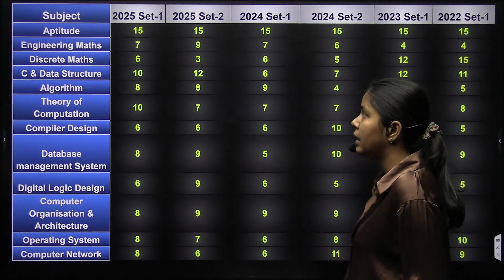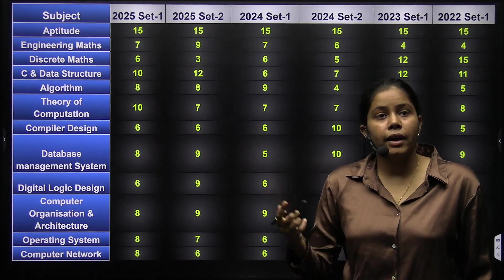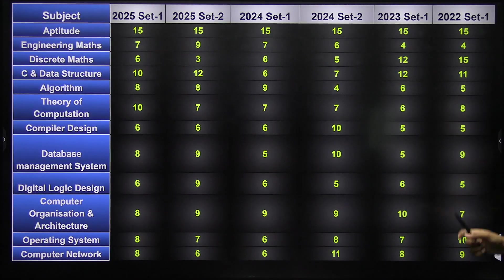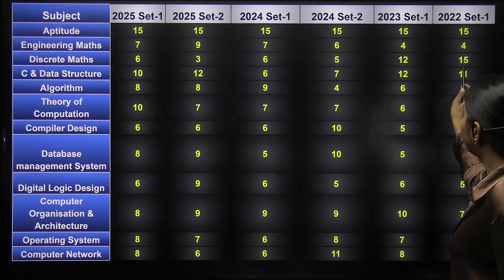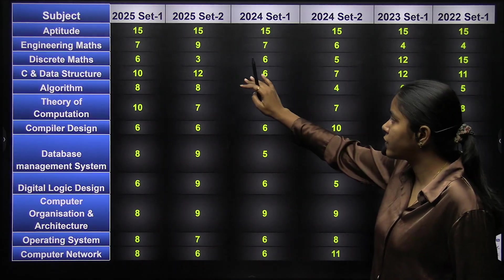So you can see that they have increased the weightage of the subjects. And discrete mathematics, we have here like previously last years they had 15, 12, 5, 6, and in set two of 2025 it got reduced to three only.